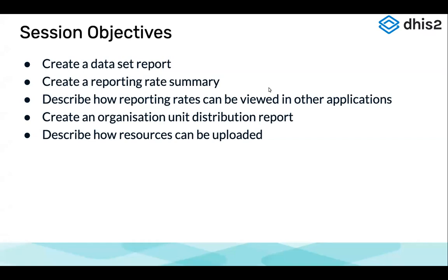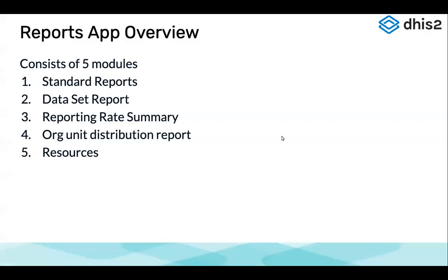The Reports app consists of five modules: a standard report, a data set report, a reporting rate summary, an organization unit distribution report, and a resources module. We are going to look at each of them in detail and then have a demo of how we can put them to use. We'll also see how reporting rates can be viewed in other applications.